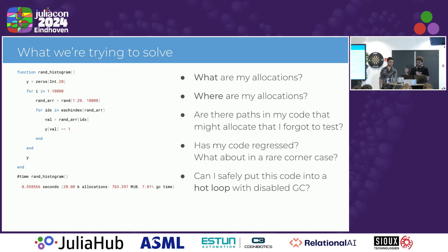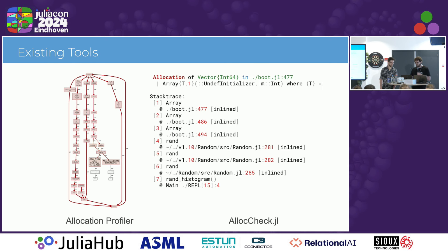I have a little function here that just allocates some arrays and tries to build a histogram. You can see that this function, each execution, does 20,000 allocations, spends time in GC, and we want to avoid that. You have a couple of tools — you can use, for example, the allocation profiler. This is the pprof visualizer for it. You can see it's not super easy to understand what's going on there, but it is very useful and should be used together with AllocTrack.